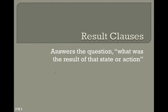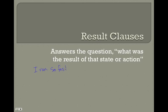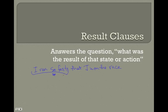One of the other common places that you're going to see the subjunctive in Latin is going to be in result clauses. This clause is going to answer the question: what was the result of that state or action? In English, we might have a sentence like: 'I ran so fast that I won the race.' The main clause is 'I ran so fast,' and the 'so' suggests the question — how fast did you run? What was the result? And 'that I won the race' is going to be a result clause.